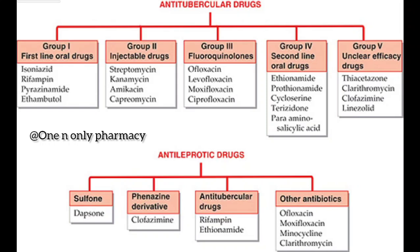In previous year GPAT exam questions, questions were directly asked from sulfone derivatives, phenazine derivatives, and anti-tubercular drugs. Let's revise once more. Anti-tubercular drugs — five classes: First-line oral drugs: Isoniazid, Rifampin, Pyrazinamide, Ethambutol. Second, injectable drugs — short trick: CAG drugs — C for Capreomycin, A for Amikacin, K for Kanamycin — plus Streptomycin.